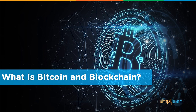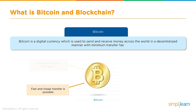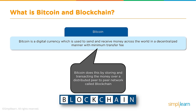Bitcoin is a digital currency used to send and receive money across the world in a decentralized manner with minimum transfer fees. It doesn't involve a third party, reducing transaction costs. Fast and cheap transfers are possible, personal identity is hidden, and all transactions are cryptographically secured using your private key. Bitcoin does this by storing and transacting money over a distributed peer-to-peer network called blockchain.